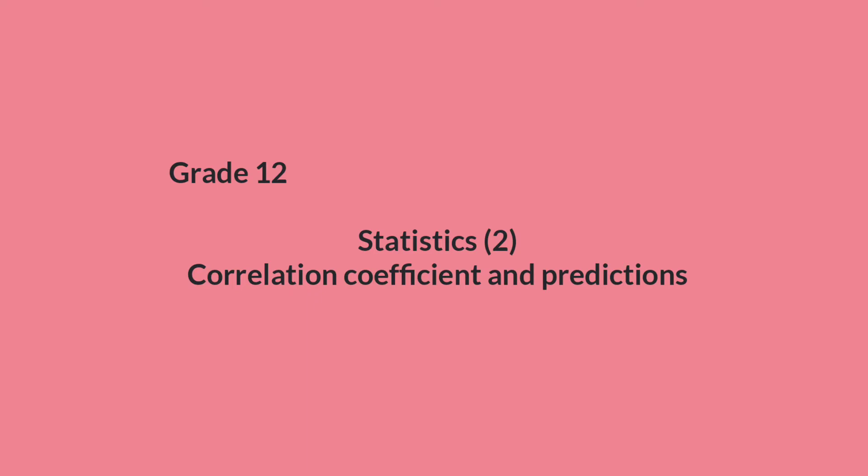Today, we are having a look at the correlation coefficient and predictions. The correlation coefficient is a value that measures the strength of the linear relationship between two variables. The correlation coefficient symbol is R, and the value is always between minus 1 and 1.